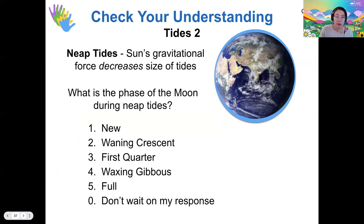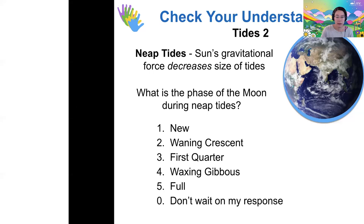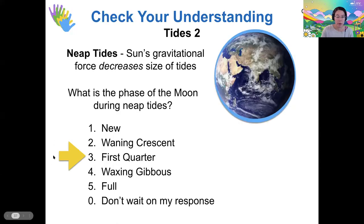Okay, so when could the neap tides occur? Okay, I'm seeing most votes for the first quarter moon. We know it's not new or full because that's when the spring tides occur. And so you can probably deduce it shouldn't be one of the waning or waxing phases because those aren't kind of perpendicular to the new and full phases. So instead, the neap tides happen at first quarter, and they also happen at third quarter.